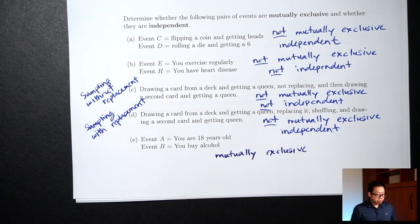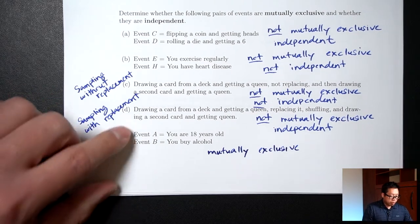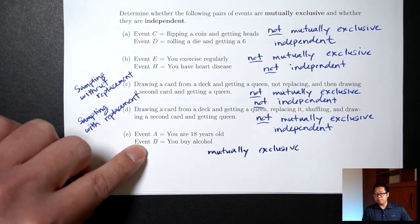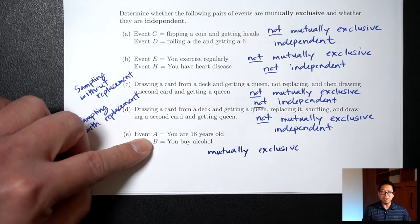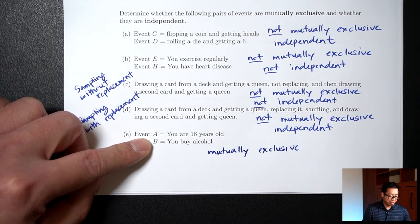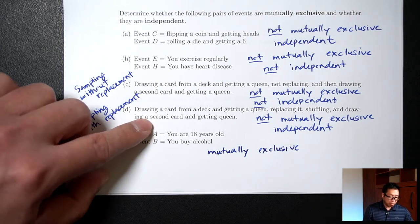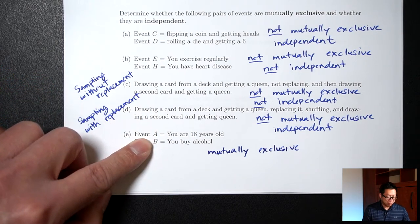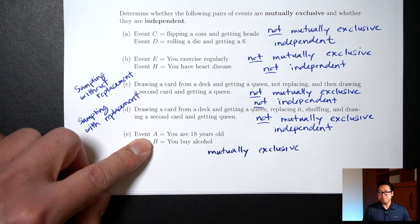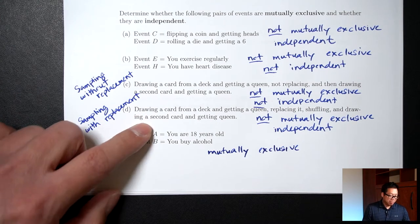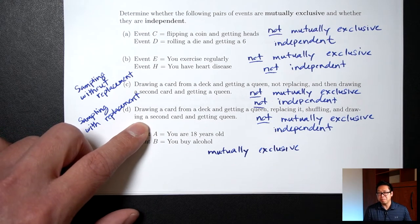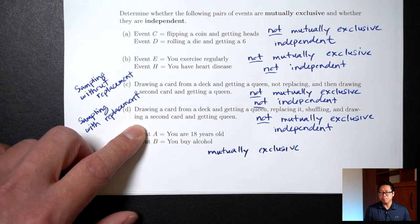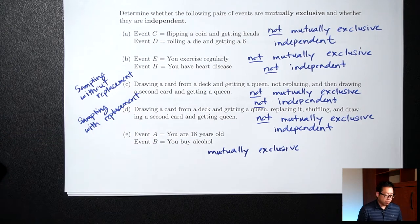What about independent? Does one affect the other? Does knowing that a person is 18 years old affect whether or not they can buy alcohol? Yes, it does. If I know you are 18 years old, then I know for sure you're not going to buy alcohol. And the other way around — if I see you buying alcohol at a store, then I know for sure you're not 18 years old; you are 21 or over. They do affect each other, so these are not independent.